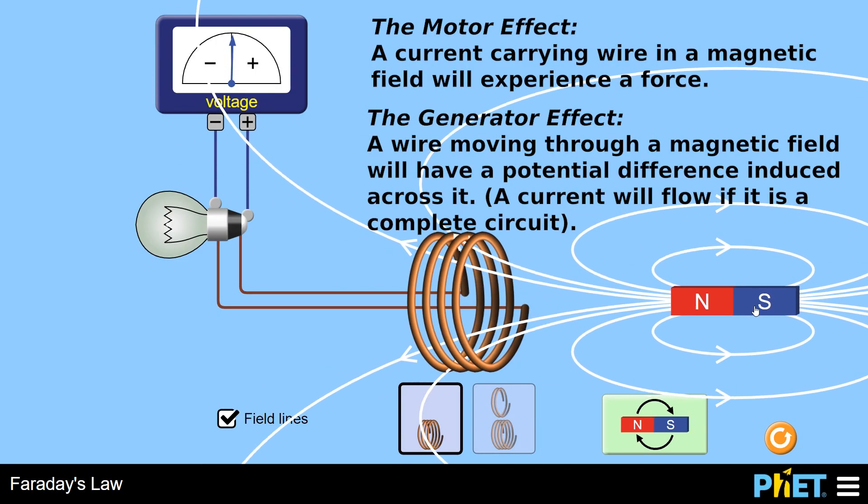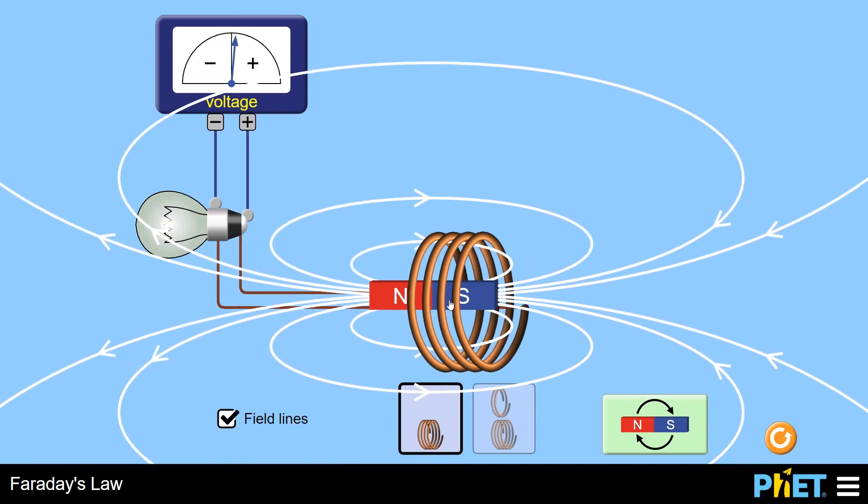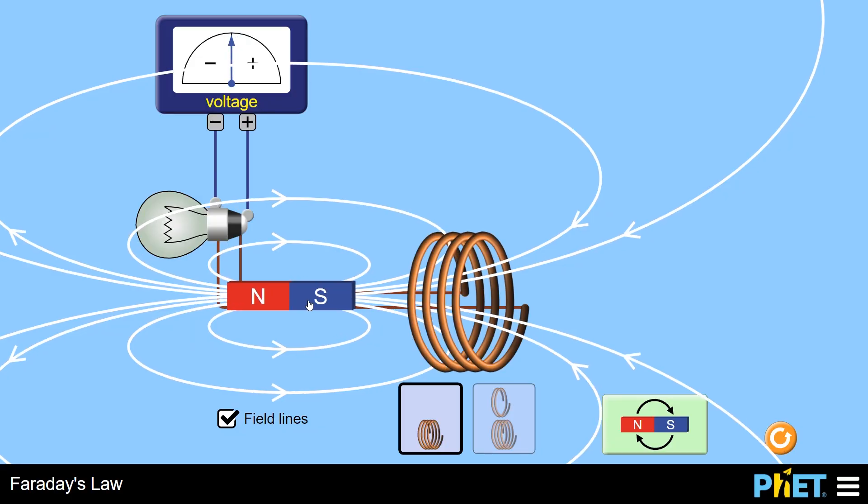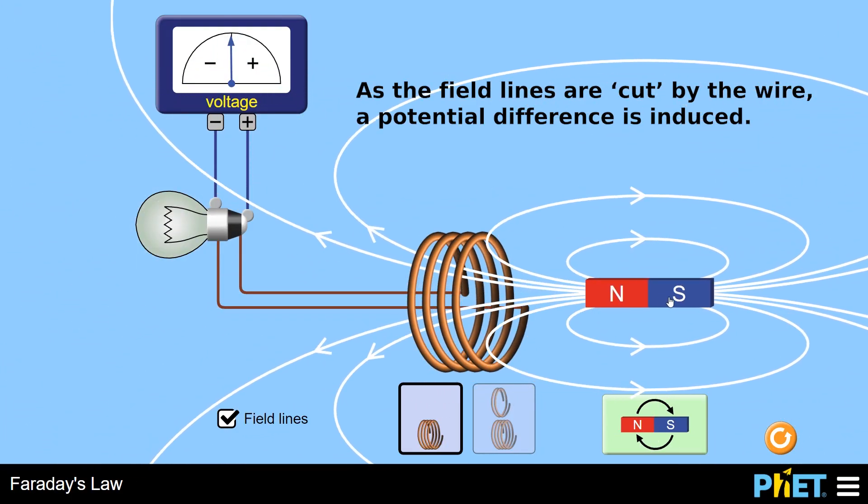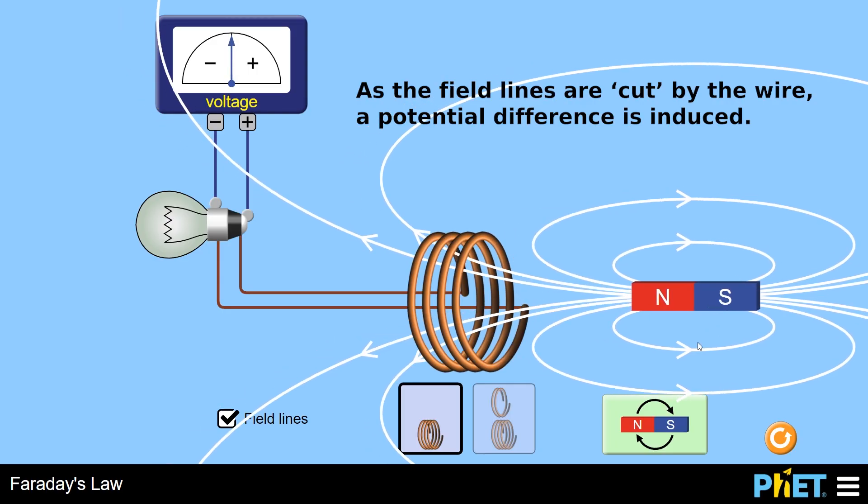So notice as the coil cuts through these field lines, you are going to generate a voltage. You're going to cause a voltage to occur across the ends of the coil.